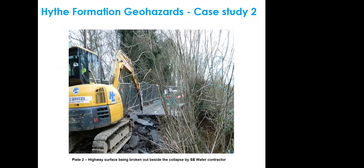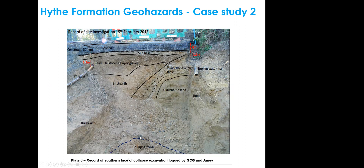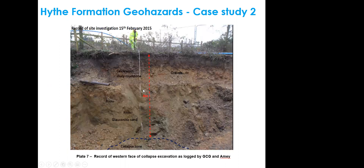The collapse area was cleared out and machinery trimmed back the sides to expose the affected area for investigation. A section looking along the road axis uphill showed asphalt and sub-base above head deposits and brick earth, with these layers draped down over the glauconitic sand of the in-situ Hythe Formation — going into a gull-fissure type feature running in that direction, with the collapse zone in the foreground and the broken water main visible to the upper right.